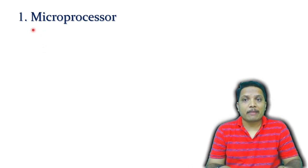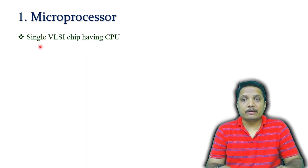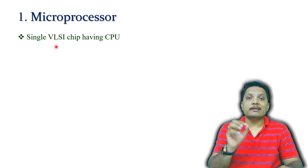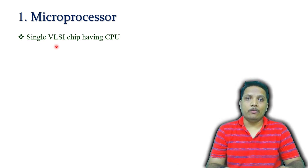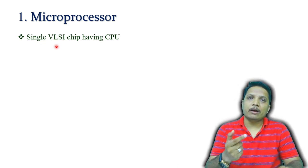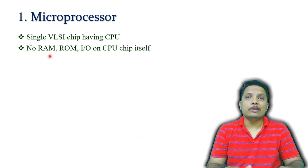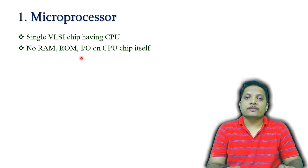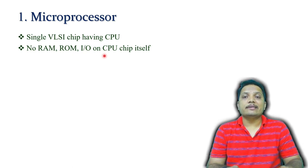In General Purpose Processors, the first one is the microprocessor. A microprocessor is a single chip which has a CPU. Remember, a microprocessor is just a CPU. It does not include RAM, ROM, or input/output ports. It is only a chip referred to as CPU.